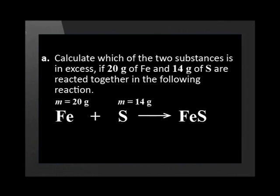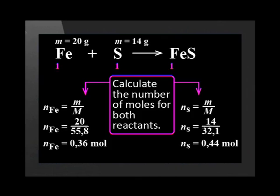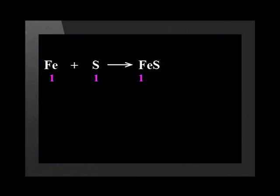Let us start by filling in the information given. We have 20 grams of iron and 14 grams of sulfur. Then we confirm that the equation is balanced and fill in the mole ratio. Let us then calculate the number of moles of each of the reactants using the equation n = m / M. Now we need to compare the mole ratio of the two substances with each other using the balanced equation.